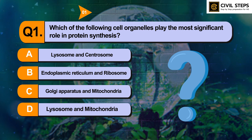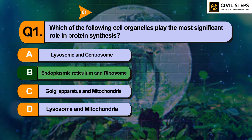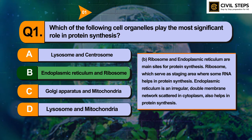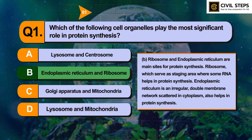You can pause this video and write your answer in the comment section below. The answer of this question is option number B — Endoplasmic Reticulum and Ribosomes. Ribosomes and Endoplasmic Reticulum are the main sites for protein synthesis. Ribosomes serve as a staging area where mRNA helps in protein synthesis. Endoplasmic Reticulum is an irregular double membrane network scattered in the cytoplasm and helps in protein synthesis.